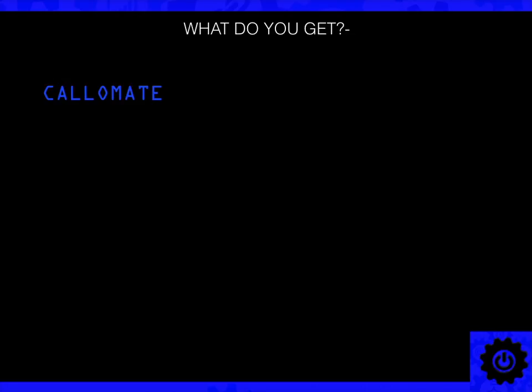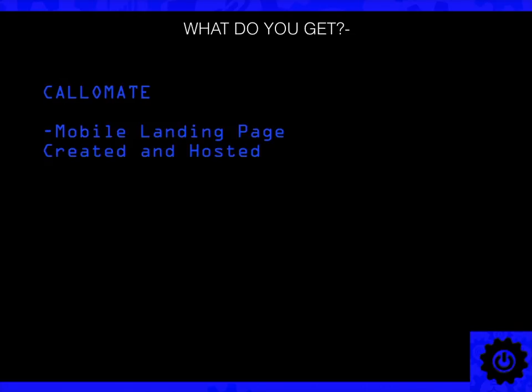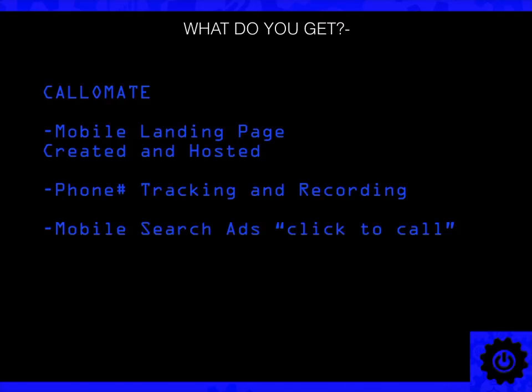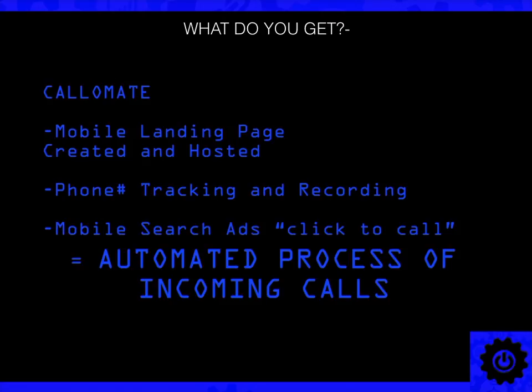What exactly do you get with Columate? You get the landing page created and hosted — no hosting or creation fees. You get a separate phone number with tracking, reports, recording, and call time. You get mobile search ads — click-to-call. When you put all those together, you're automating the process of getting incoming calls of new customers.